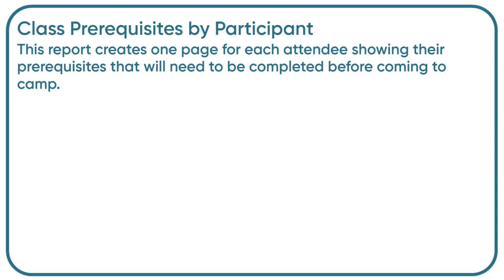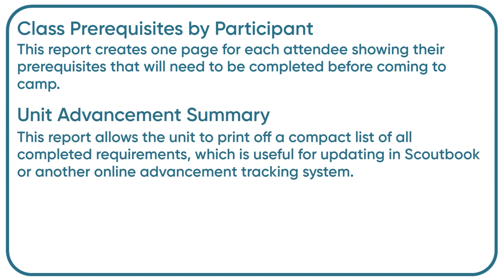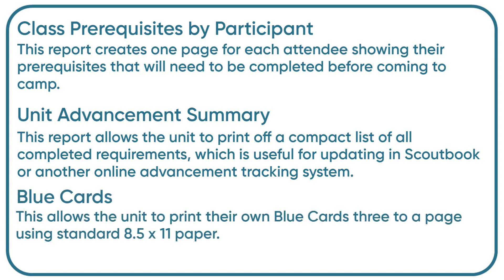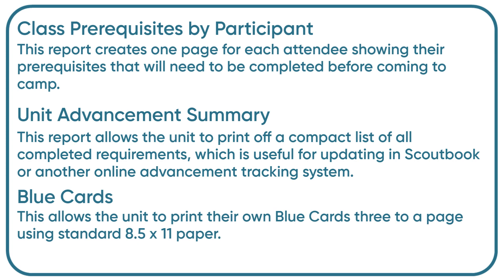Class prerequisites by participant: this report creates one page for each attendee showing their prerequisites that will need to be completed before coming to camp. Unit advancement summary: this report allows the unit to print off a compact list of all completed requirements, which is useful for updating in Scoutbook or another online advancement tracking system. Blue cards: this allows the unit to print their own blue cards.